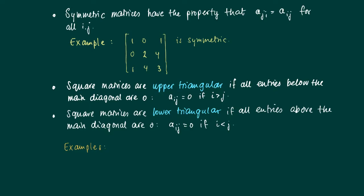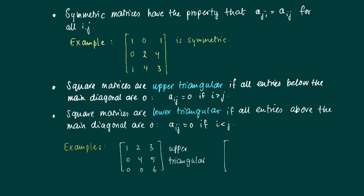Consider the following examples. We have a matrix whose first row is 1, 2, 3, second row is 0, 4, 5, and third row is 0, 0, 6. This is upper triangular because the part below the main diagonal — 1, 4, 6 — is zero. Now consider a matrix with diagonal 1, 2, 3 and entries 4, 5, 6 in the lower part — the upper part above the diagonal are zeros, so this matrix is lower triangular.